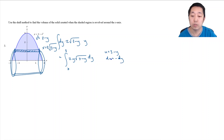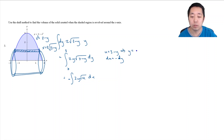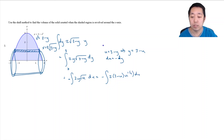Let u = 3 minus y, so du = negative dy. I can convert everything: the integral becomes 2 times y times √u du with a negative sign. To replace y, I use y = 3 minus u. So it becomes negative integral of 2(3 minus u) u^(1/2) du. For the bound conversion: u(0) = 3 and u(3) = 0, giving bounds from 3 to 0. I swap the bounds to eliminate the negative sign, getting 0 to 3.